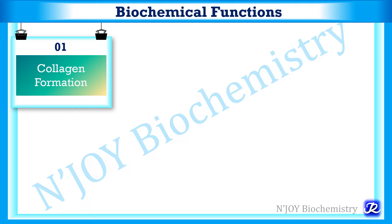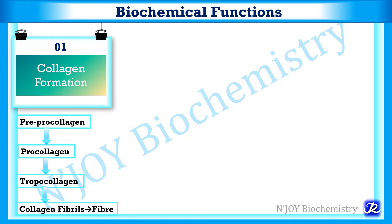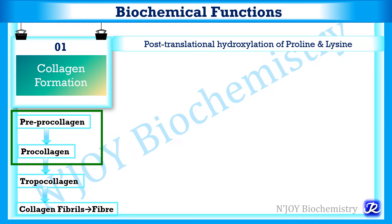The first important biochemical function of vitamin C is collagen formation. This is required for production of supporting tissue like osteoid involved in bone formation, dentin involved in teeth formation, and the intercellular substance of capillaries. Collagen formation involves various steps: formation of procollagen from pre-procollagen, then tropocollagen from procollagen, and finally collagen fibrils to form collagen fibers. The first step of forming procollagen from pre-procollagen involves post-translational hydroxylation of proline and lysine, catalyzed by prolyl hydroxylase and lysyl hydroxylase in the endoplasmic reticulum of fibroblasts.